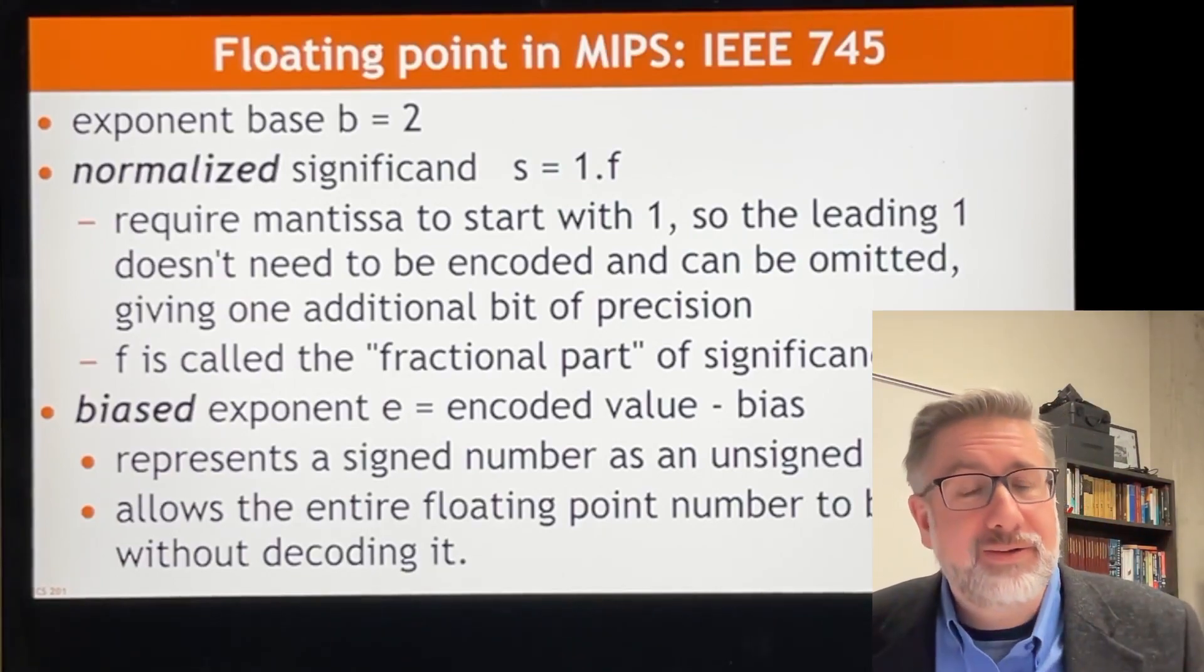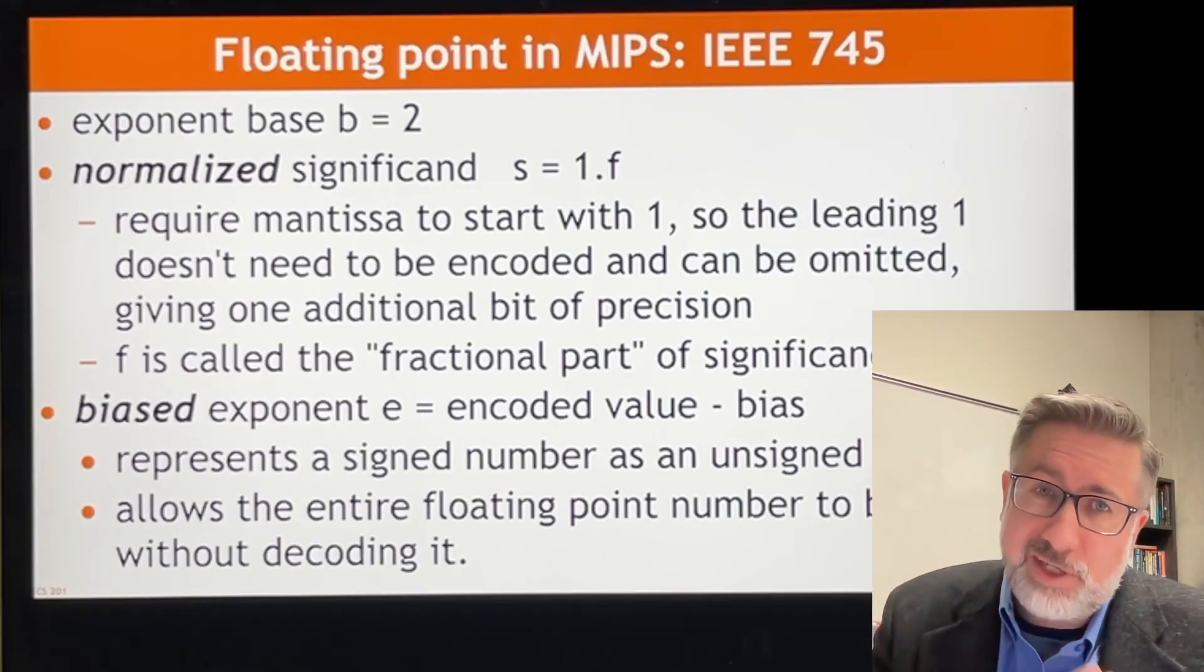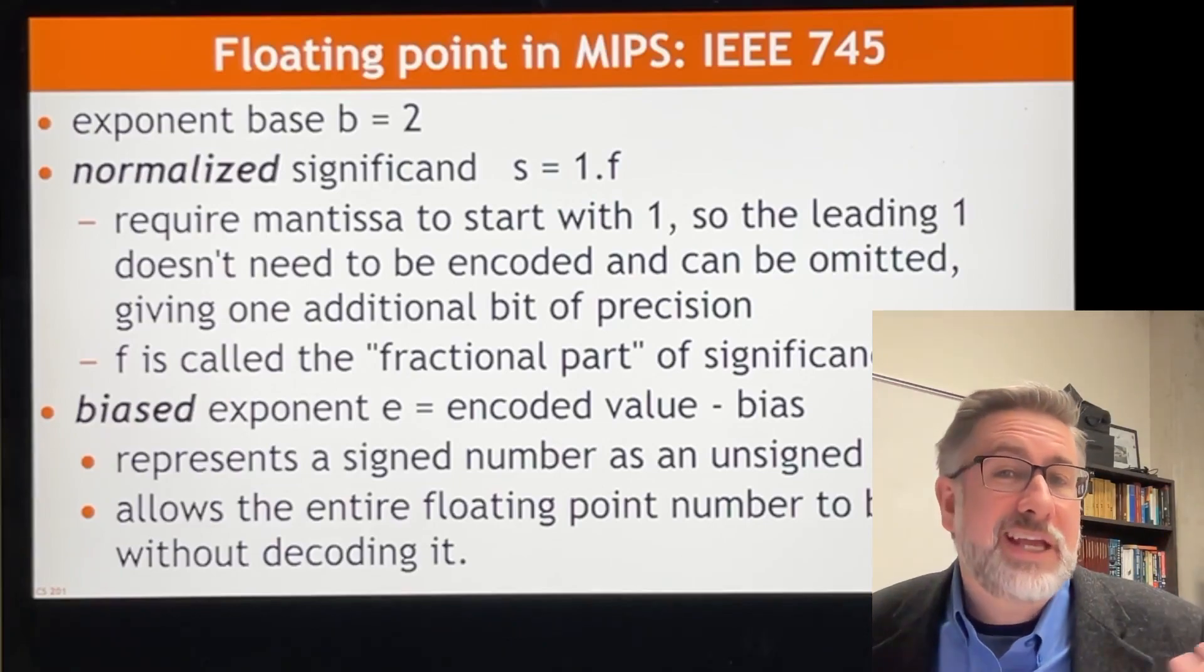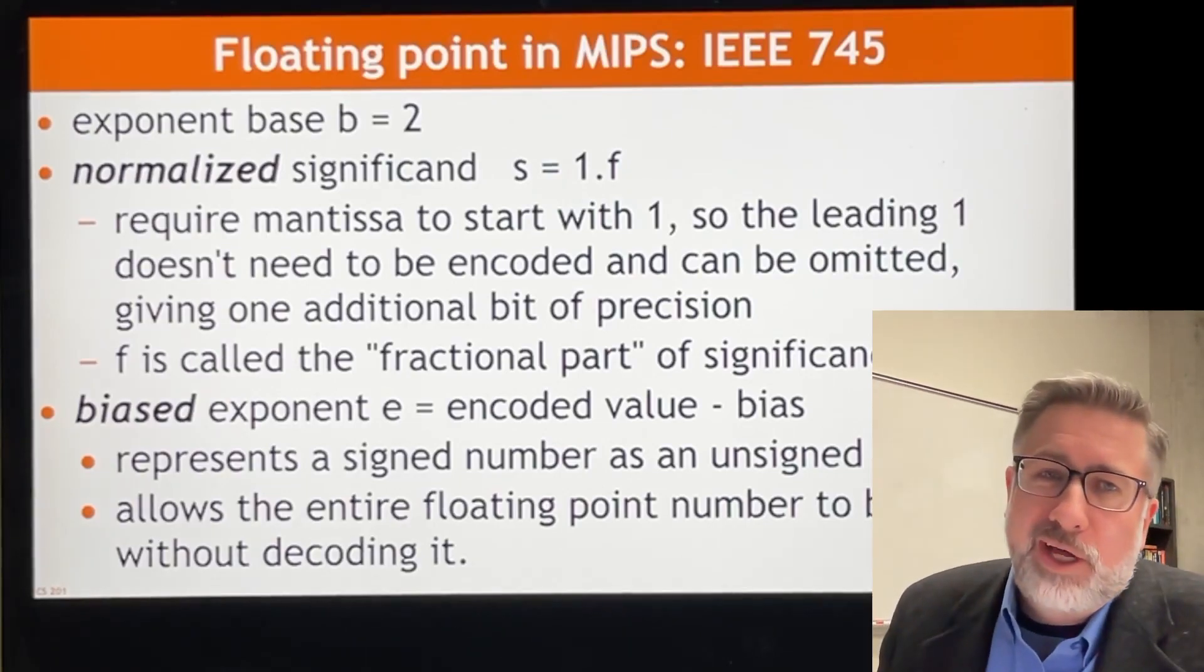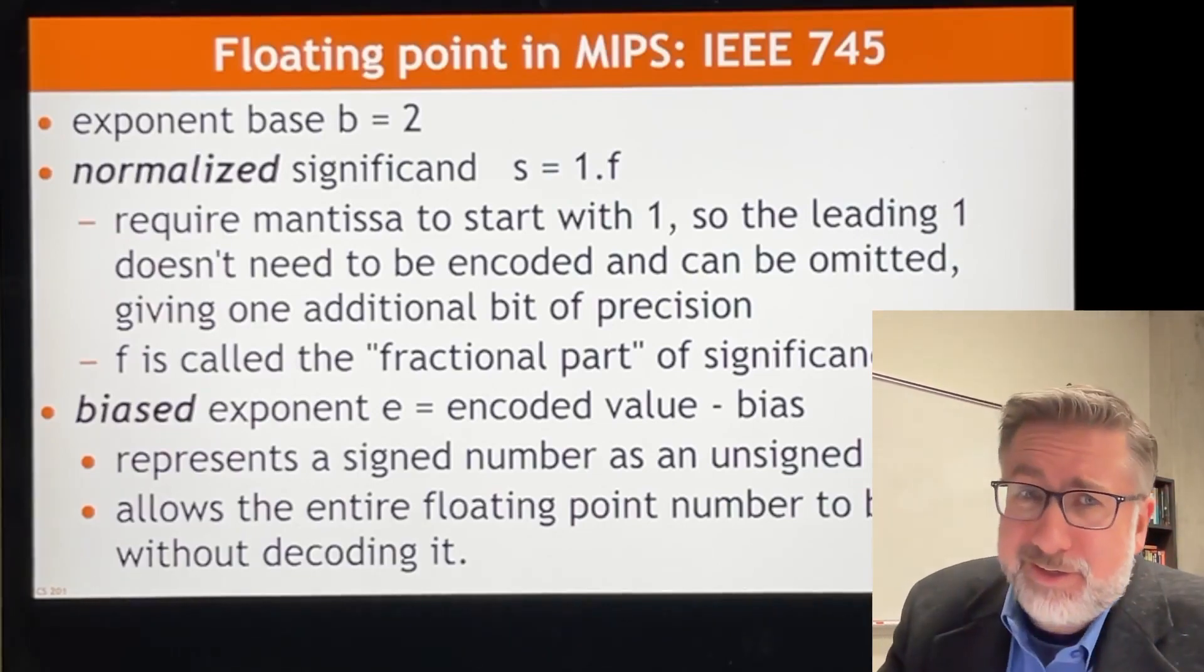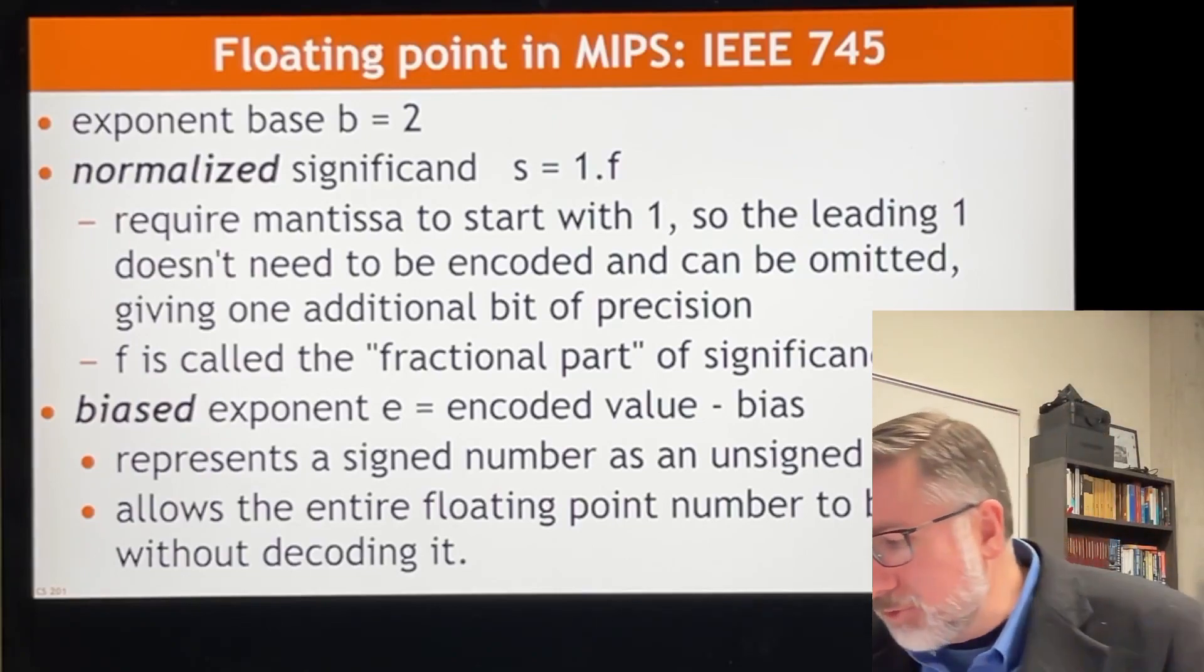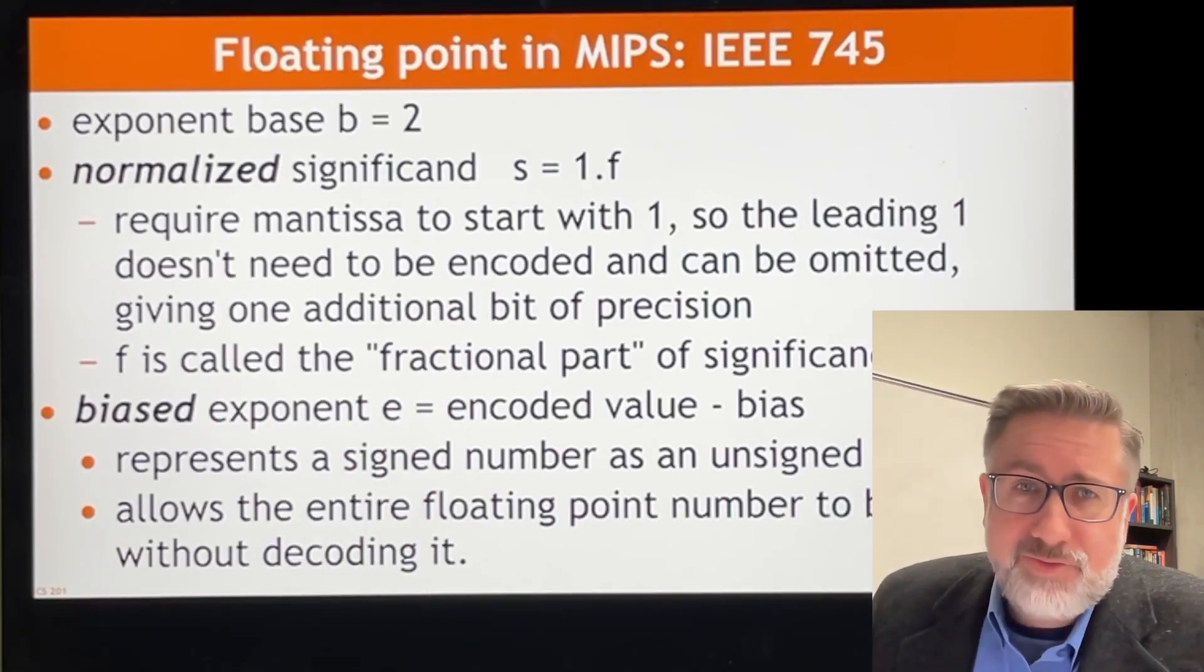And so because of that, we can use a standardization to say we're always going to have 1 point something times 2 to the something. And if something is always true, then we don't have to say that it's there. So we can omit that leading 1 in our encoding and save a bit, which is always nice if we can save a bit here or there. So the significand is stored in a normalized form.